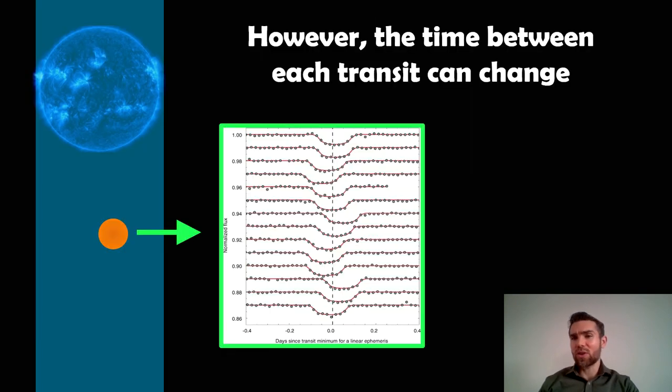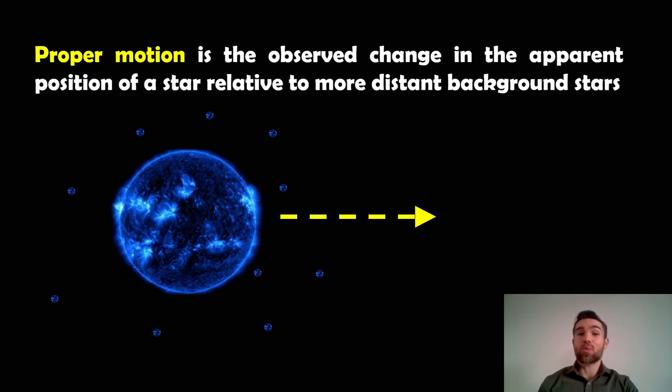However, as I mentioned before, that's not always the case. Here is an example where you've got the transit and then each successive one is kind of below it or above it. You can see that it varies about. It's earlier or later than it actually should be. And again, there's a few reasons for that, but the one we're interested in for this particular video is proper motion.